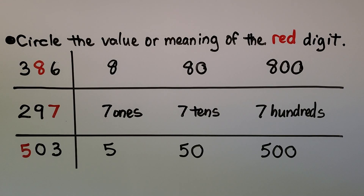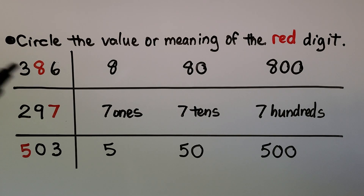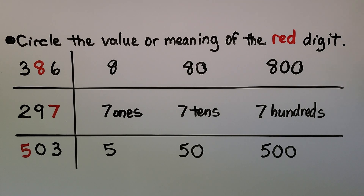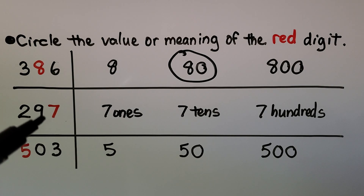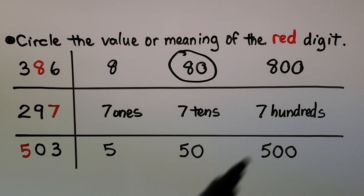Here we need to circle the value of the red digit. We have 386 — our red digit is the 8. Is the value of the 8 equal to 8, 80, or 800? If you said 80, you're right! Here we have 297 — the red digit is a 7. Is the value of this red digit seven ones, seven tens, or seven hundreds? If you said seven ones, you're right!